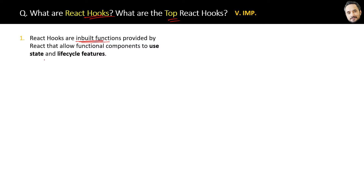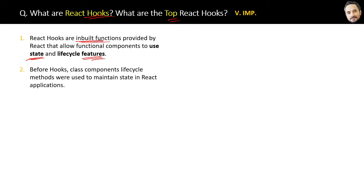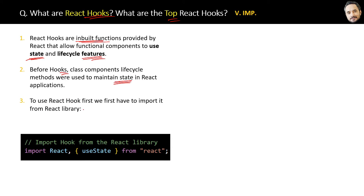React hooks are inbuilt functions provided by React that allow functional components to use state and lifecycle features. Before hooks, class component lifecycle methods were used to maintain state in a React application. But now hooks are getting more and more popular because they are for functional components rather than class components.